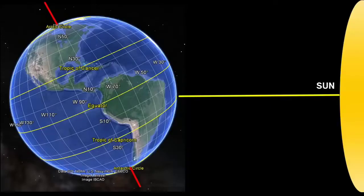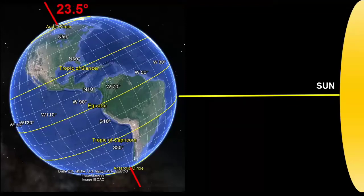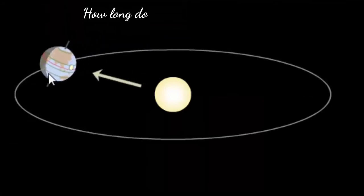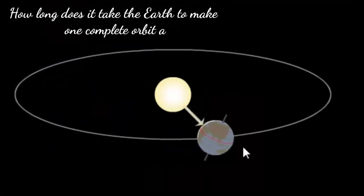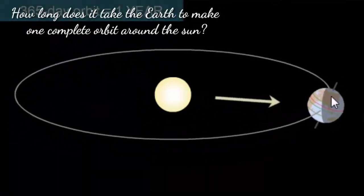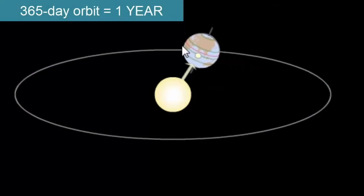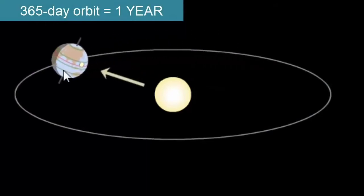If we look more carefully at this axis of rotation, we see that it is tilted relative to Earth's orbit around the Sun. Instead of being perpendicular, it's tilted 23.5 degrees. How long does it take the Earth to make one complete orbit around the Sun? 365 days, or one year.